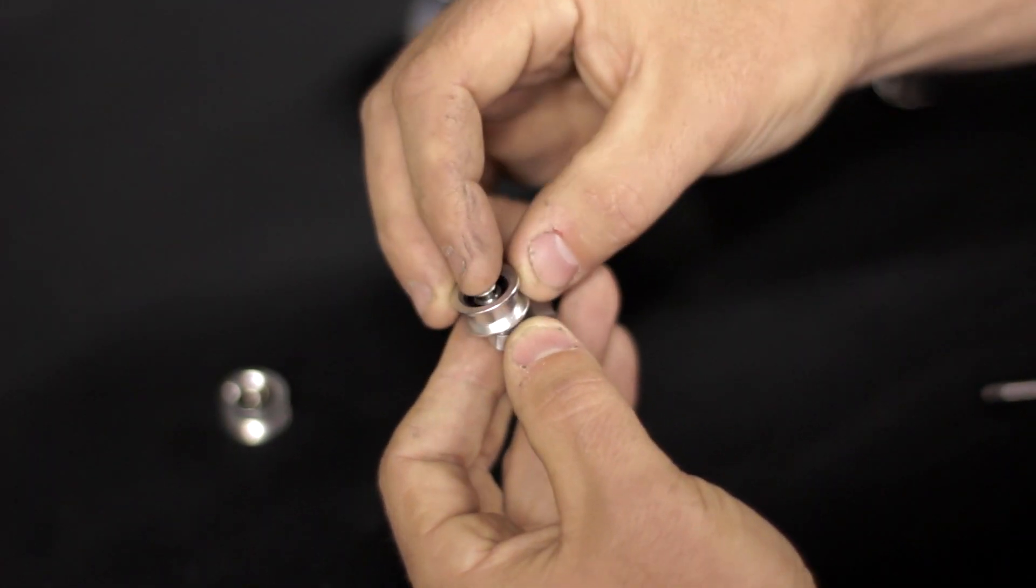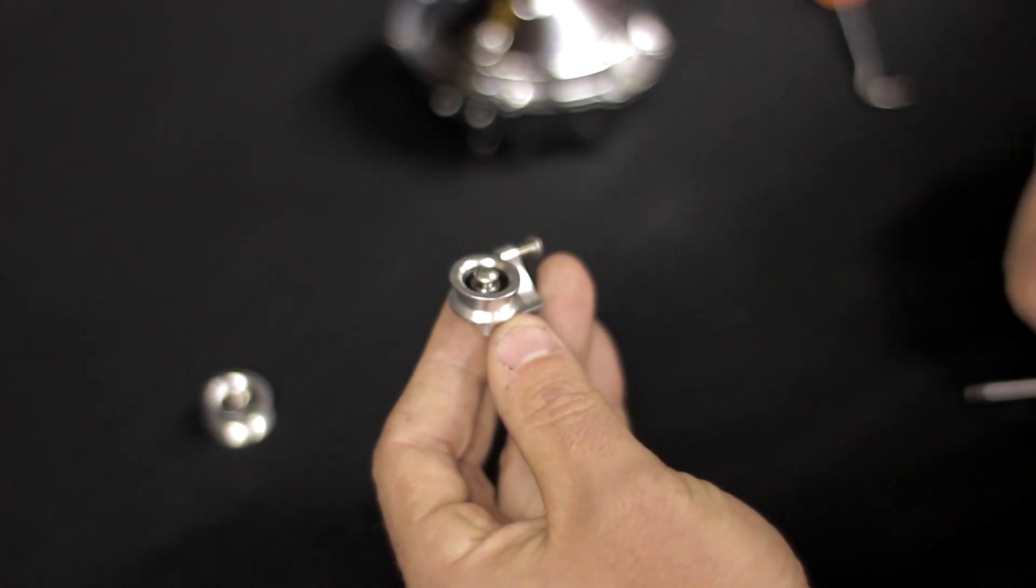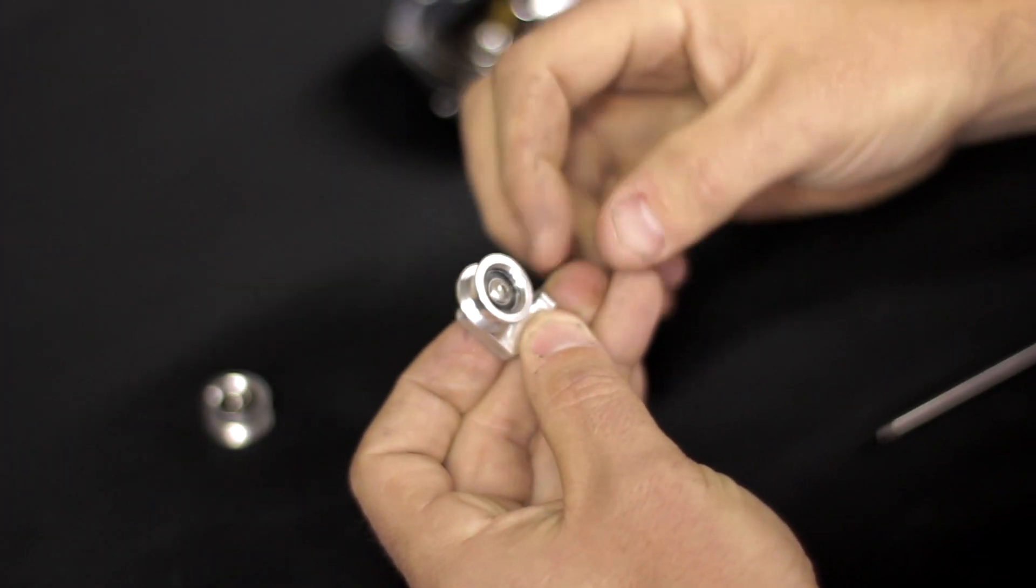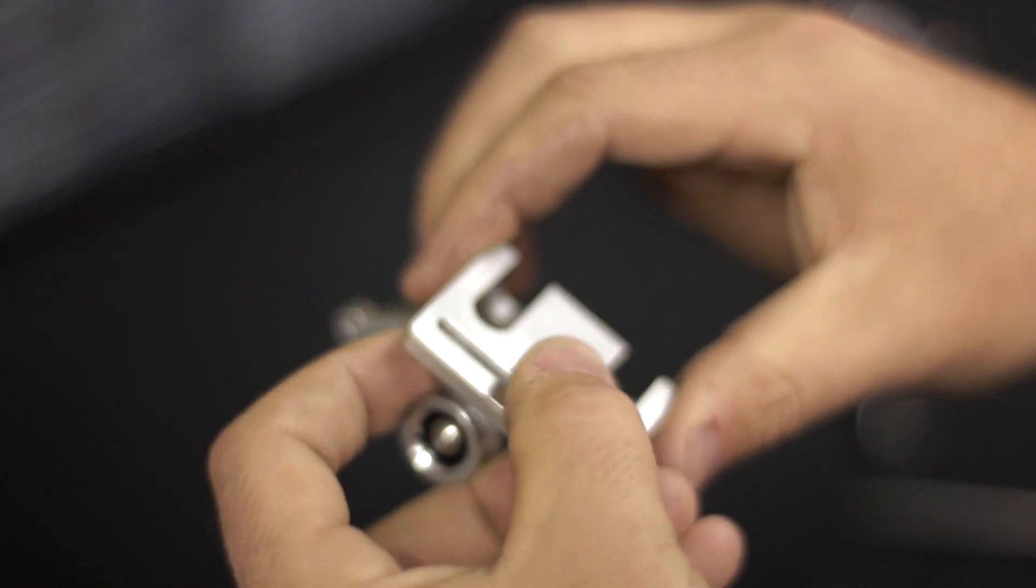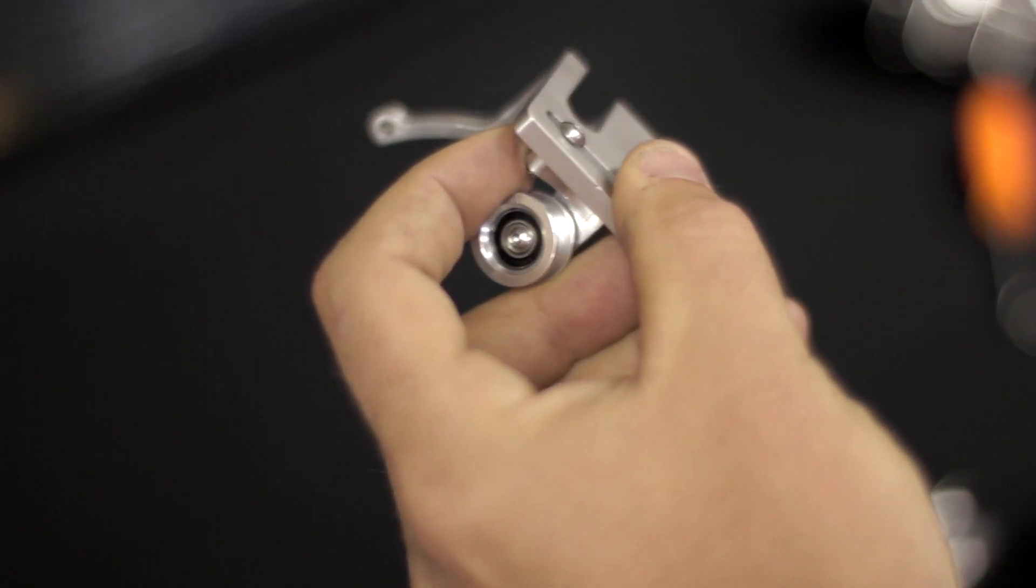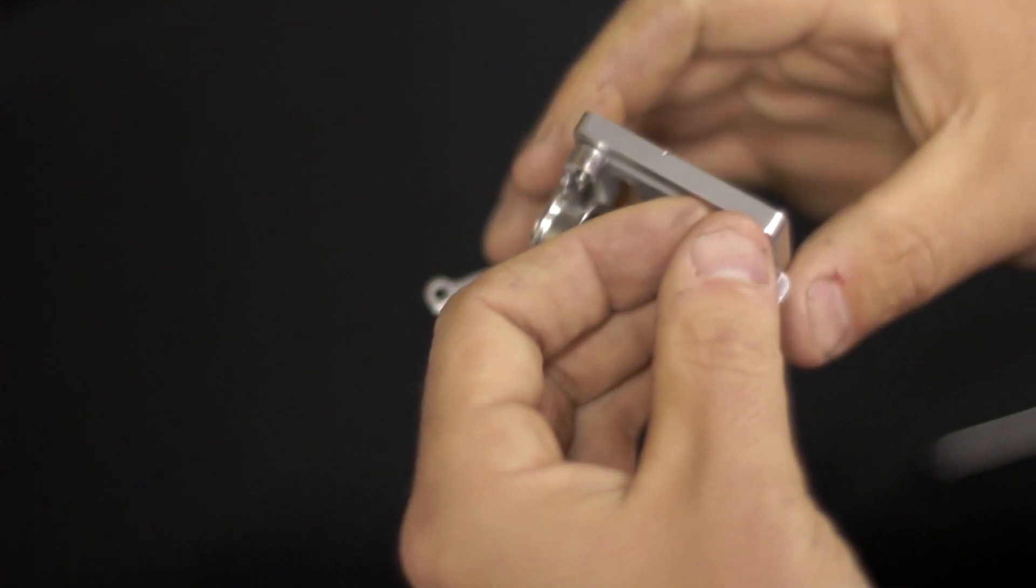Next, we want to start the assembly of the conversion kit. You want to install both pulleys to the mounting brackets, and you want to make sure to use Loctite. Next, we want to assemble the mounting bracket to the main carrier, and you want to do that again for the secondary pulley.